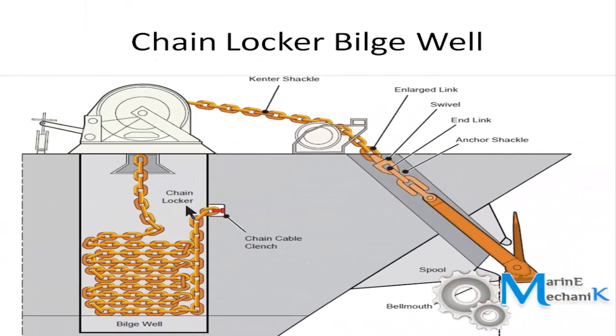Here is the picture of the exact arrangement of an ocean-going vessel. Here is the anchor, and through the hawse pipe it comes to the windlass, and then through the spurling pipe it enters the chain locker. And here you can see there is a bilge well, and the water that comes from the chain can drain out through perforated plates to the bilge well.